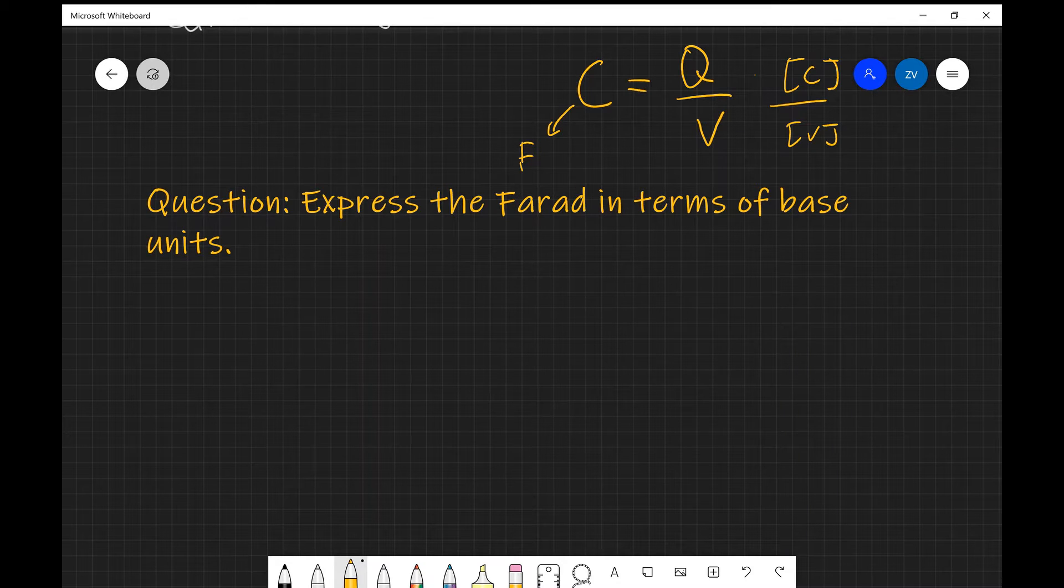The first thing to do when we're dealing with any question on base units is to simplify that equation as much as possible. So I'm just going to start off with writing C equals Q divided by V.